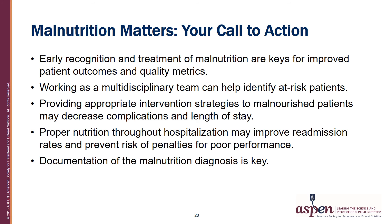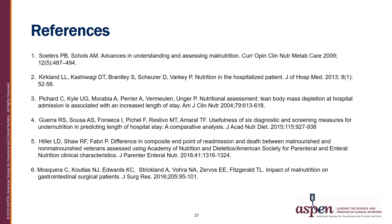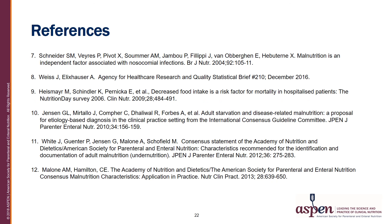Malnutrition matters — your call to action. After hearing this presentation, we hope you have learned that malnutrition matters. Early recognition and treatment of malnutrition are keys for improved patient outcomes and quality metrics. Working as a multidisciplinary team can help identify at-risk patients. Providing appropriate intervention strategies may decrease complications and length of stay. Proper nutrition throughout hospitalization may improve readmission rates and prevent risk of penalties for poor performance. Documentation of the malnutrition diagnosis is key. References used for the development of this presentation are listed on the following slides.